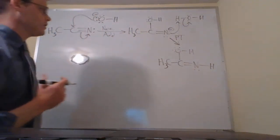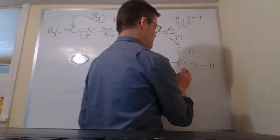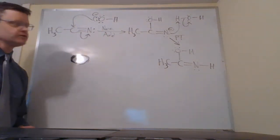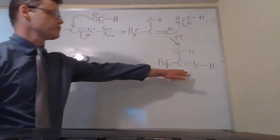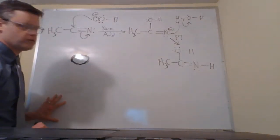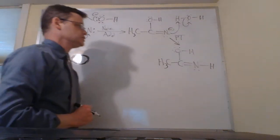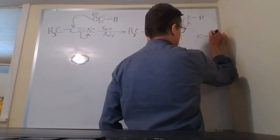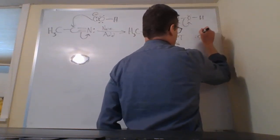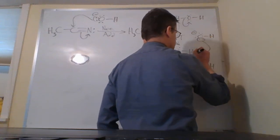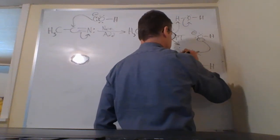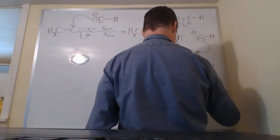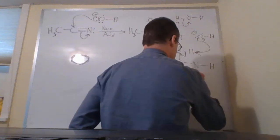This gets us what's called the enol tautomer of the amide. The next two steps, or the last two steps of this mechanism, are going to focus on tautomerizing this to the amide. That's going to involve two proton transfers. In the first one, we're going to deprotonate or remove this hydrogen, and we're going to go down here to do that proton transfer.